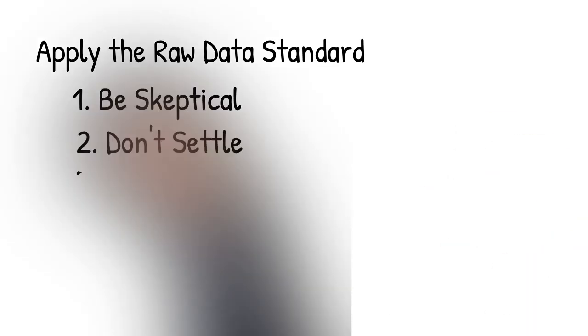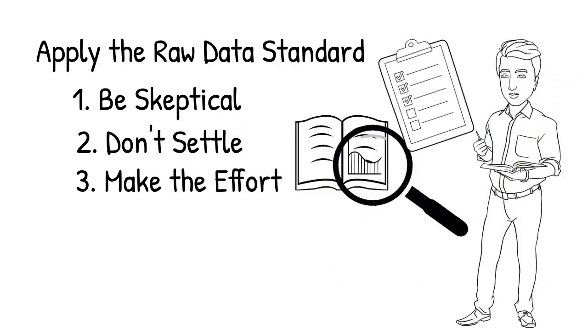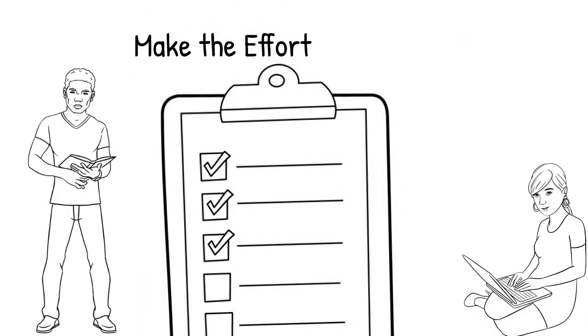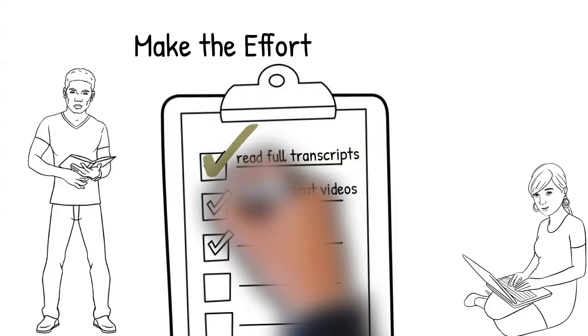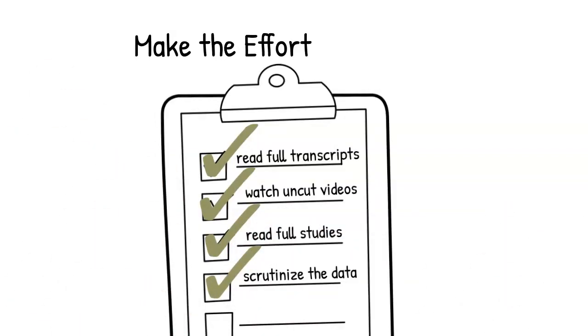Third, make the time and effort to find the raw data and vet it. Raw data doesn't just consist of numbers, but also statements and events. Journalists are infamous for quoting people out of context, and scholars often twist statistics, so don't blindly trust them. Instead, read full transcripts, watch the entirety of uncut videos, read full studies, and scrutinize the data before you come to a firm conclusion.